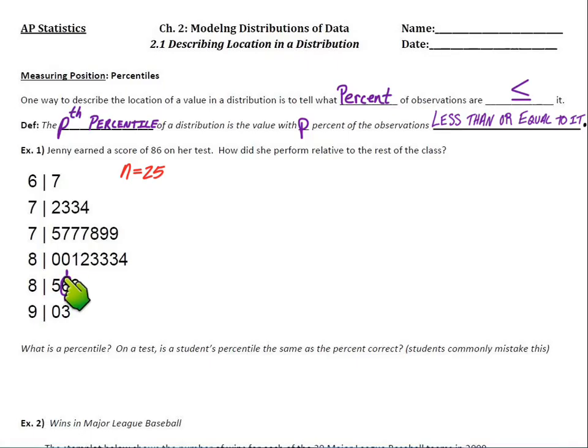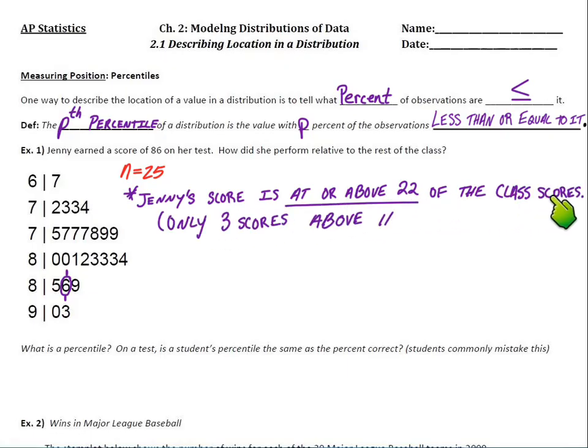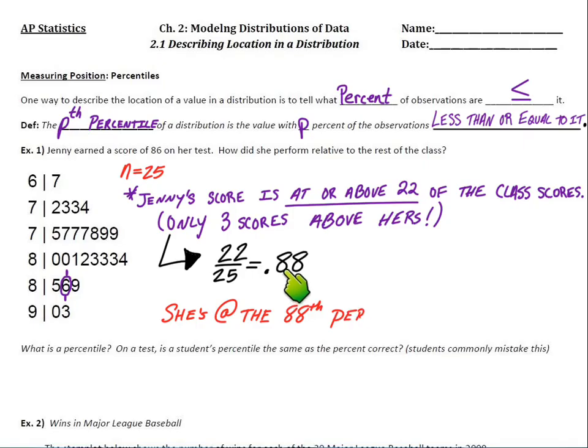So that's Jenny. And if we count up the number of test scores here, it looks like we've got 25 total students in the class. And that means Jenny's score, she was near the top of the class, she'd be ranked 22nd overall if we put the test scores in order. So we can say that Jenny's score is at or above 22 of the class scores. And we can see, on the other hand, there's only three scores in the class that are above hers. So if we calculate Jenny's percentile within her class, we know there's 22 scores less than or equal to hers out of the 25, which as a decimal is 0.88, meaning she's at the 88th percentile.